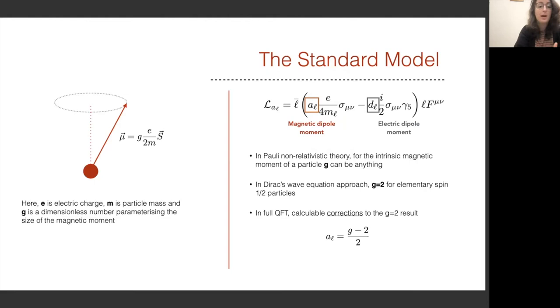One would think about this in terms of the μ vector here, where e is the electric charge, m is the particle's mass, and g is some dimensionless quantity that specifies its strength. In the Pauli non-relativistic theory, the intrinsic magnetic moment of any particle g could be any value. Then when Dirac built on this and added relativity, it was predicted that g was equal to 2 for elementary spin-half particles.